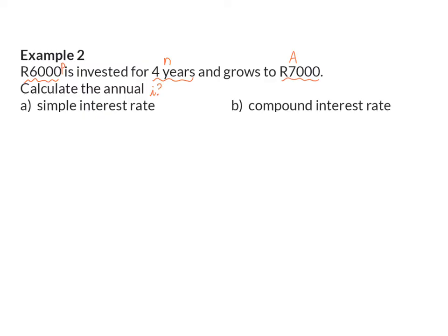In A, it is specified to be a simple interest rate. So, here we are going to use our simple interest formula. And when I now substitute into this formula, I need to solve I, that is inside the bracket, and that can be done using algebra. And because I is on the inside of the bracket, I am going to start by getting rid of the 6,000 on the outside of the bracket by dividing.